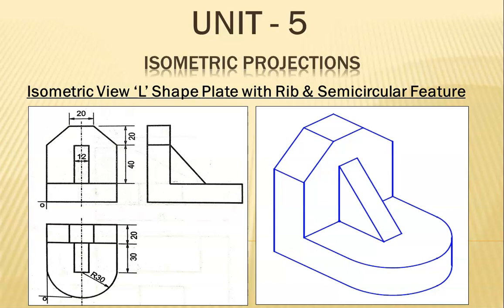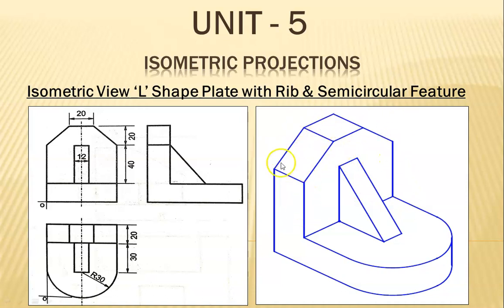Hello friends, today we are going to see the isometric view of an L-shaped plate having a rib and a semicircular feature. The question is given and this is the final solution. Here you can see the plate — this is the L-shaped plate which has a semicircular feature at the base, and this is a supporting member called a rib section. The edges of the vertical section of the L-plate have also been chamfered. Let's start with the step-by-step approach to complete this object.